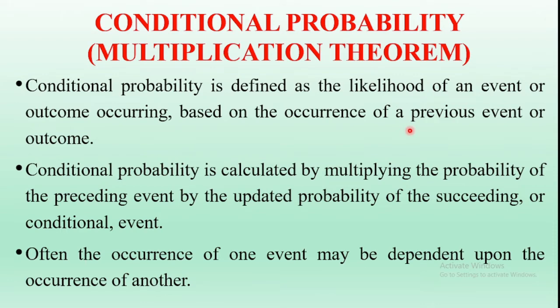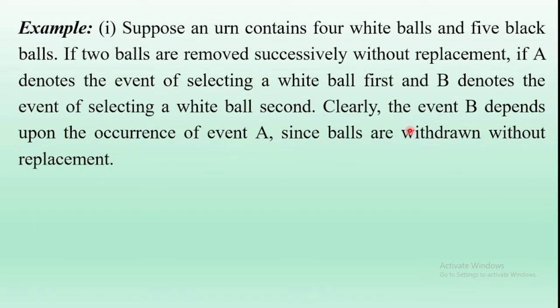A good example of conditional probability: suppose an urn contains four white balls and five black balls, so the total number of balls is nine. If two balls are removed successively without replacement, and event A denotes selecting a white ball the first time and event B denotes selecting a white ball the second time, then clearly event B depends upon the occurrence of event A, since the balls are drawn without replacement.